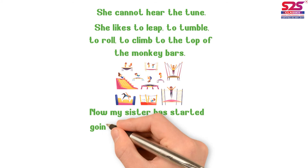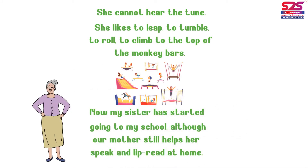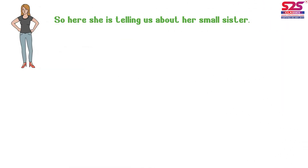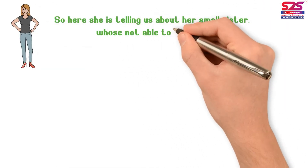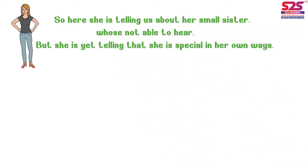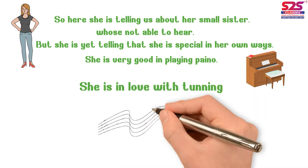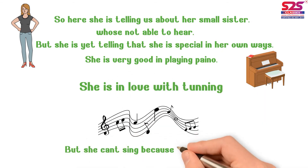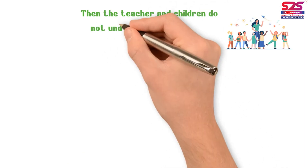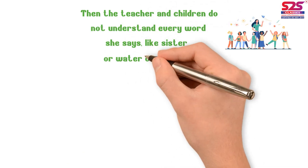My sister has started going to school, although our mother still helps her lip read at home. The poem is about a small sister who is not able to hear, but she is special in her own ways — she is very good at playing piano and she loves music, but she cannot sing because she cannot hear. The teacher and children do not understand every word she says, like 'sister,' 'water,' or 'thumb.'